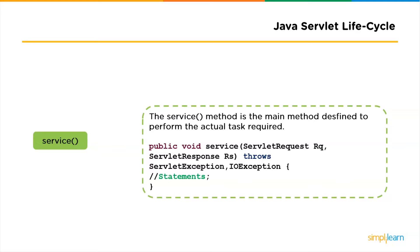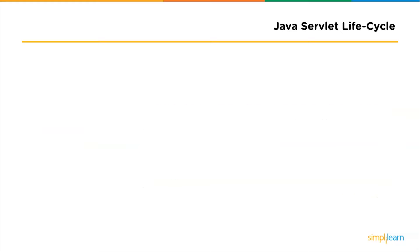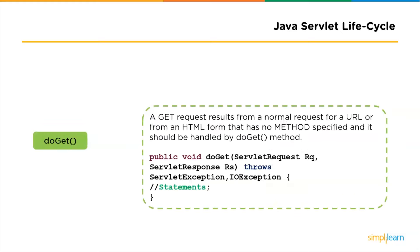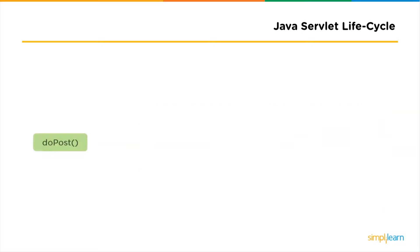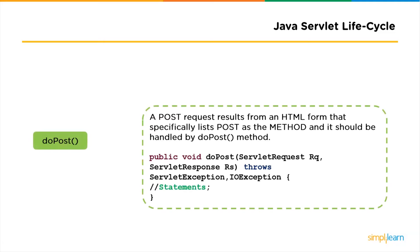Digging a little deeper, we have do-get, do-post, do-delete, and do-put methods. A get request results from a normal request from a URL or an HTML form that has no method specified, and it should be handled by the do-get method. A do-post request results from an HTML form that specifies POST as the method, and it should be handled by the do-post method. Similarly, do-put and do-delete are usually used to update and delete data when asked by the client.